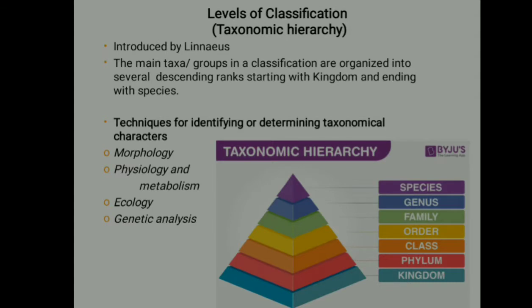Next, we have the levels of classification. The main taxa or groups in a classification are organized in several descending ranks, starting with kingdom and ending with species. Techniques for determining taxonomic characteristics include morphology, physiology and metabolism, ecology, and genetic analysis. The levels are: species, genus, family, order, class, phylum, and kingdom.